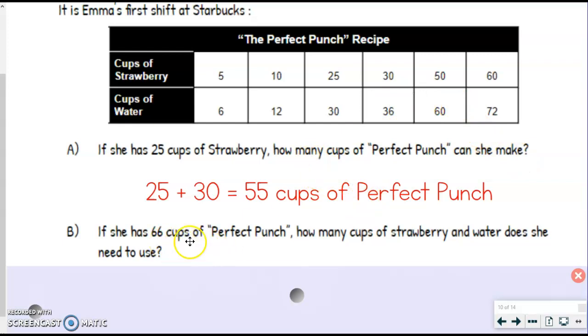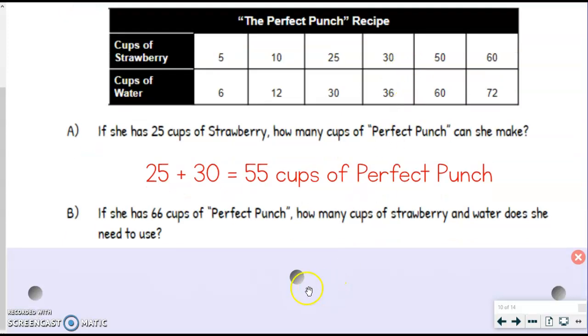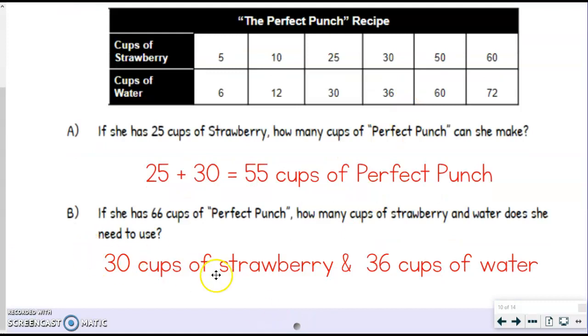So 66 cups, look at which column is going to add up to 66. If I look right here, if I do 30 plus 36, that's going to give me 66. So this is the column I want. Now I just need to say that it's going to be 30 cups of strawberries and 36 cups of water. That's it. Those are the two pieces we need. So that would be our answer. Just one little step more than what we did in level one.